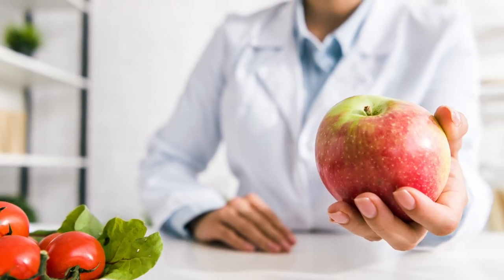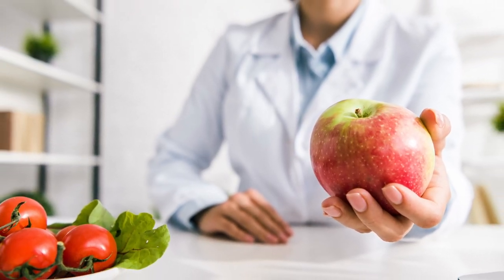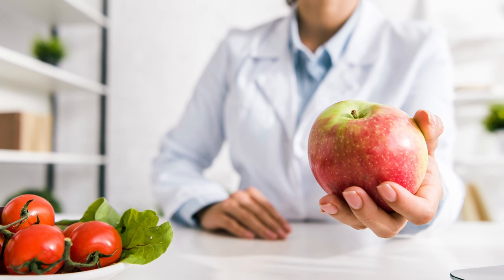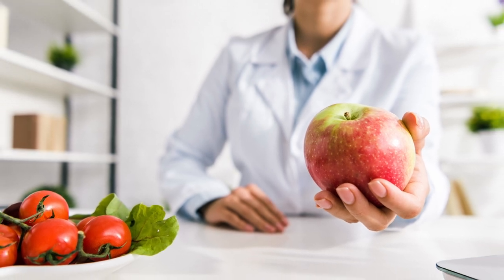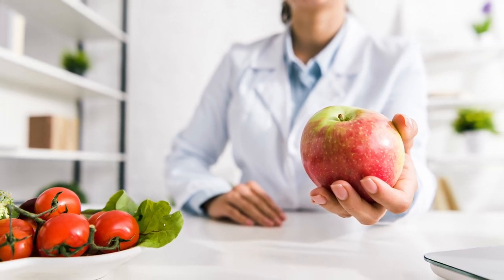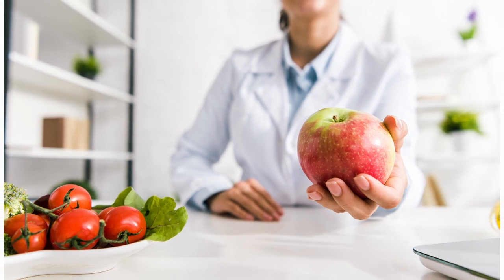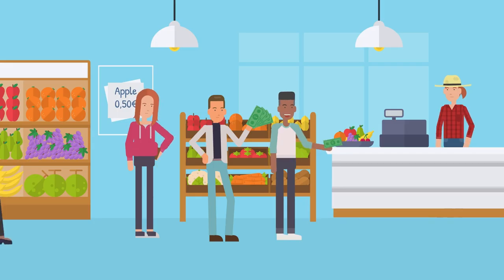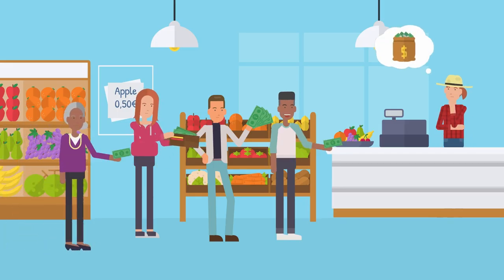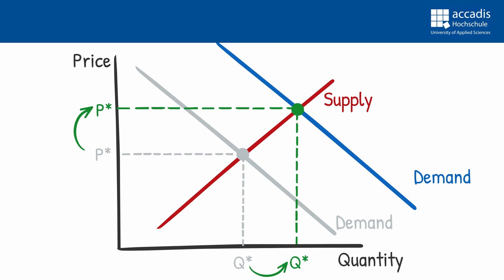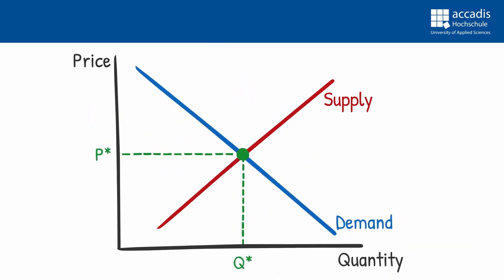Applied to our apple market, this would mean that an external effect — for example, a new study showing how healthy apples are, or a rise in income — increases the willingness to pay for apples of all our consumers. The apple firms then see this opportunity to increase the supplied quantity and to increase the price. So we will end up with more apples sold at a higher price.